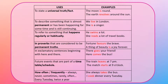Third, to refer to something that happens regularly or habitually — 'He swims a lot' and 'She reads a lot of travel books.' Fourth, in proverbs that are considered permanent truths — 'Fortune favors the brave' and 'A thing of beauty is a joy forever.' Fifth, in exclamatory sentences beginning with 'here' and 'there' — 'There goes your friend' and 'Here comes the bus.'